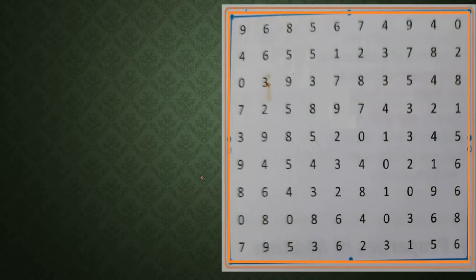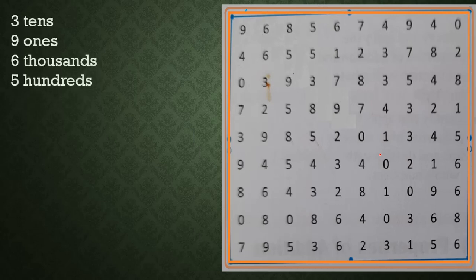Here is the given grid in which we will find hidden numbers. Here is the first jumbled set of place values: three tens, nine ones, six thousands, and five hundreds. Using these four place values we have to form the number.